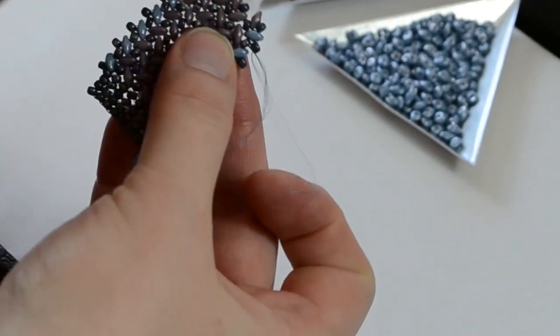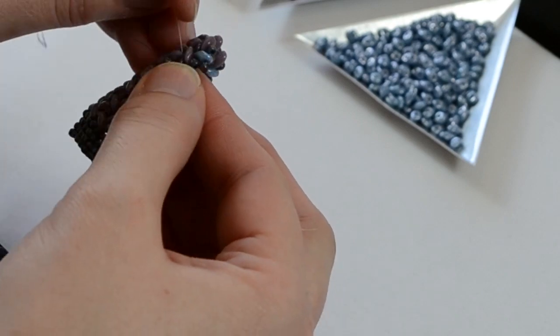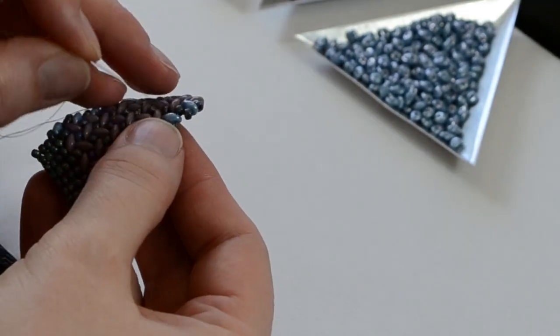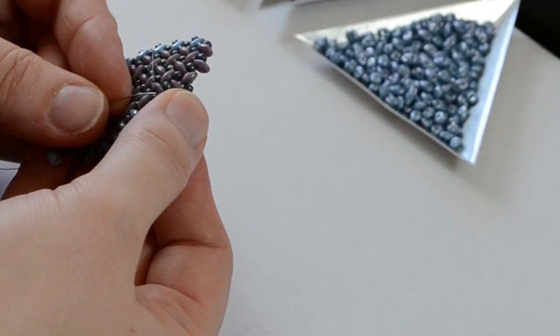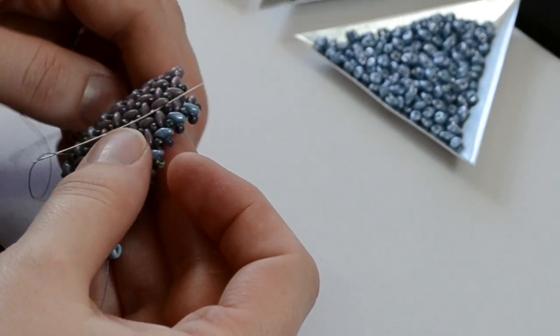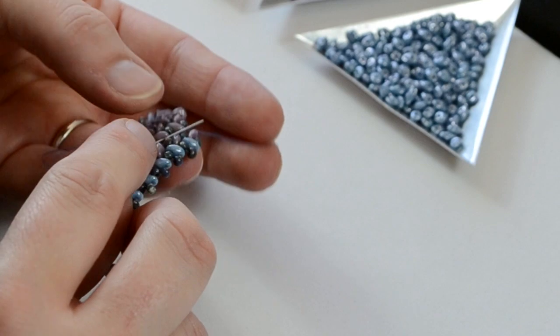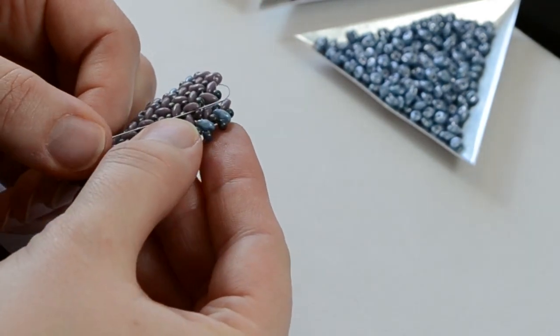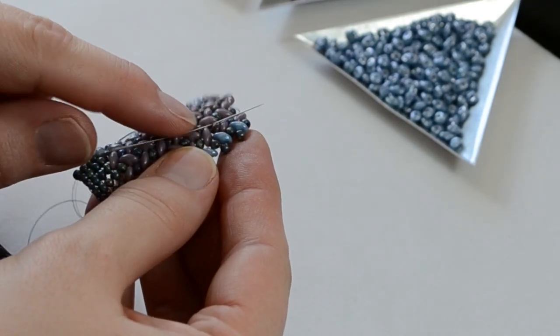To tie off the thread, pick up the bar of thread that runs between two stitches right next to where your thread is exiting. If you can see, the tip of the needle has picked up this bar of thread that runs between this seed bead and this SuperDuo.